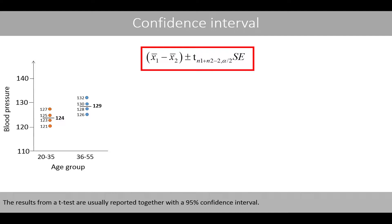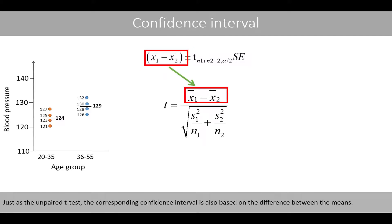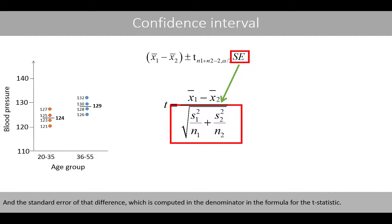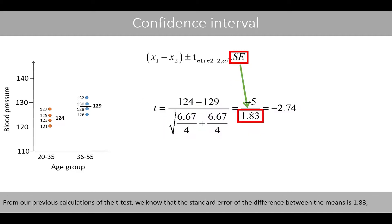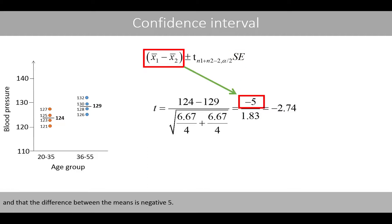The results from a t-test are usually reported together with a 95% confidence interval. This equation can be used to calculate the confidence interval for the difference between the means. Just as with the unpaired t-test, the corresponding confidence interval is based on the difference between the means and the standard error of that difference, which is computed in the denominator in the formula for the t-statistic. Note that if the sample sizes of the two groups are different, the standard error will be based on the expression in the denominator of the more complicated formula. From our previous calculations, the standard error of the difference between the means is 1.83 and the difference between the means is negative 5.